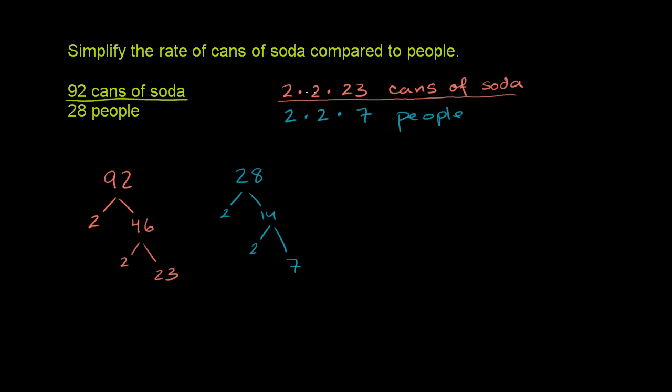Now, both of these numbers have a 2 times 2 in it, or they're both divisible by 4. That is their greatest common factor. So let's divide both the top number and the bottom number by 4.